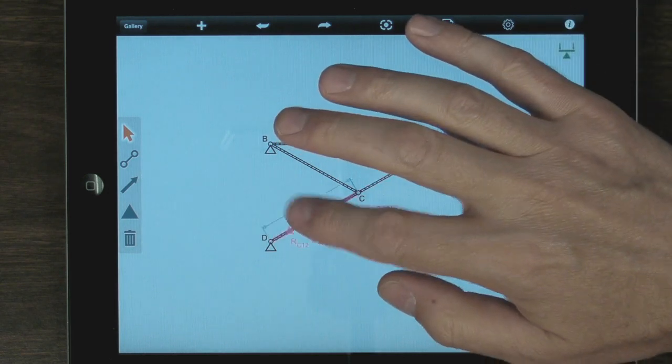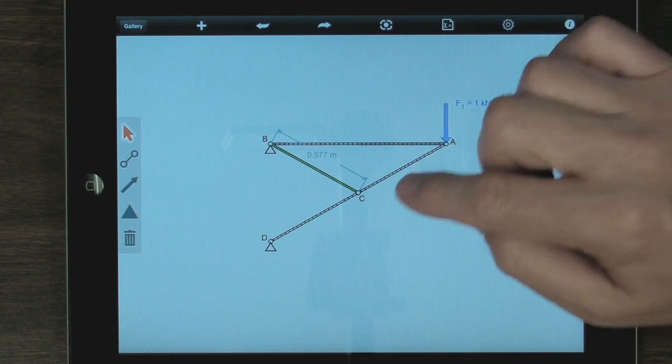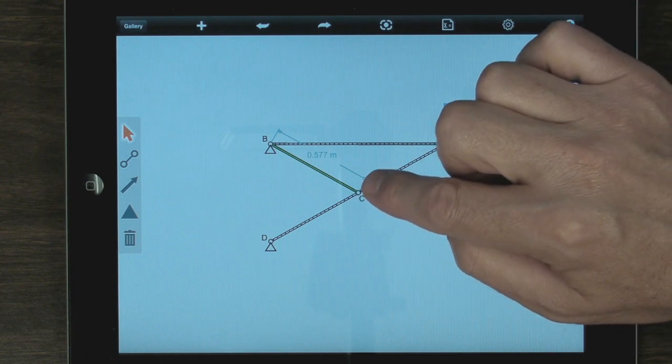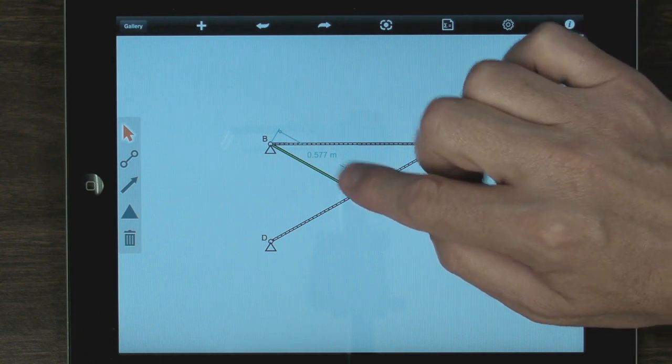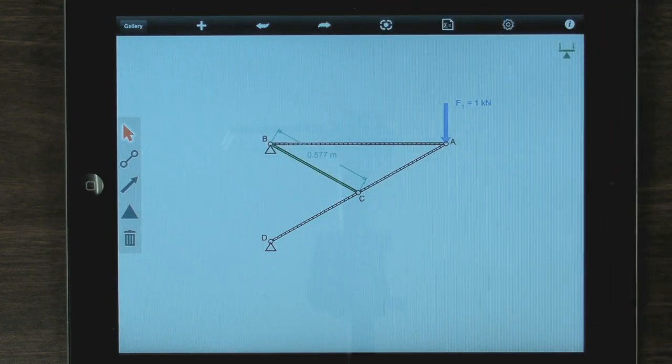2 kilonewtons in that bar. 2 in that one. Nothing in that one. Turns out that bar doesn't necessarily need to be there as long as that doesn't buckle. As long as this bar really is only there to keep that joint from moving. Okay.